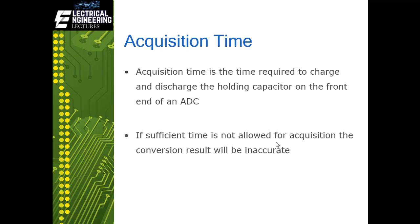Acquisition time is the time required to charge and discharge the holding capacitor on the front end of the ADC. The holding capacitor must be given sufficient time to settle to the analog input voltage level before the actual conversion is initiated. If sufficient time is not allowed for acquisition the conversion result will be inaccurate, so we have to insert an intentional delay between multiple conversions.